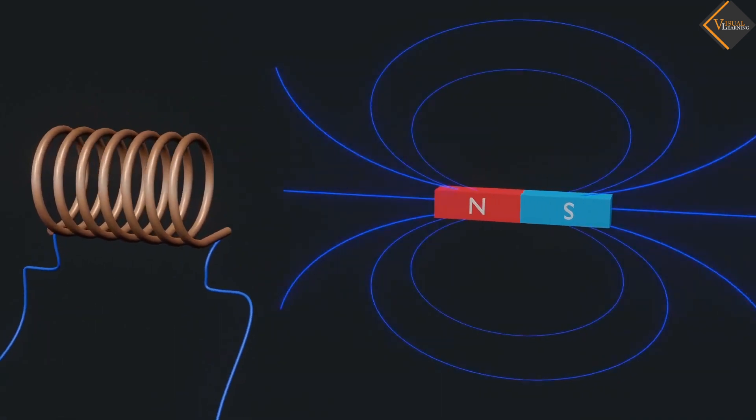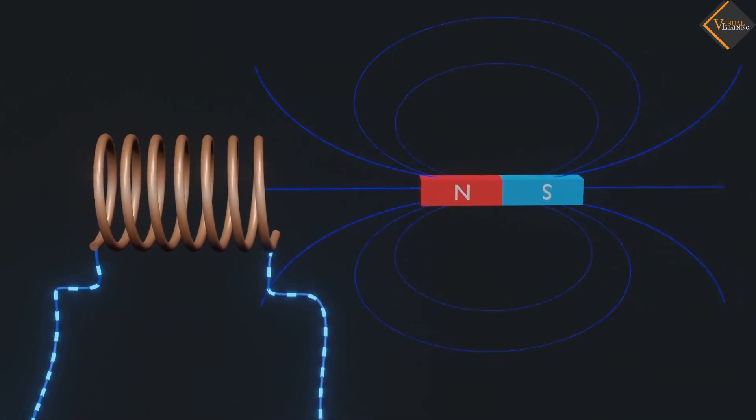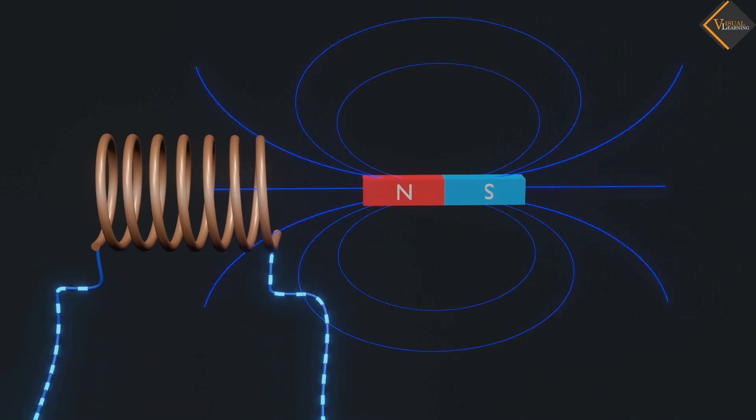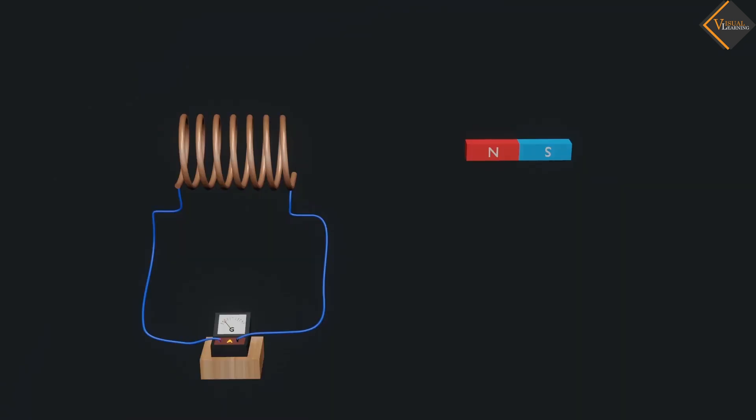Move this bar magnet towards the coil. As we can see, the magnetic field lines produced by the bar magnet passes through the coil. We notice that while the bar magnet is moving towards coil, there is a momentary deflection in the needle of the galvanometer, say to the right.